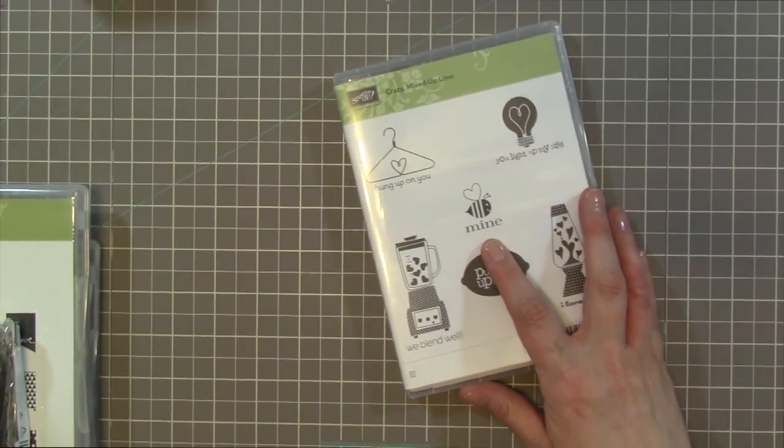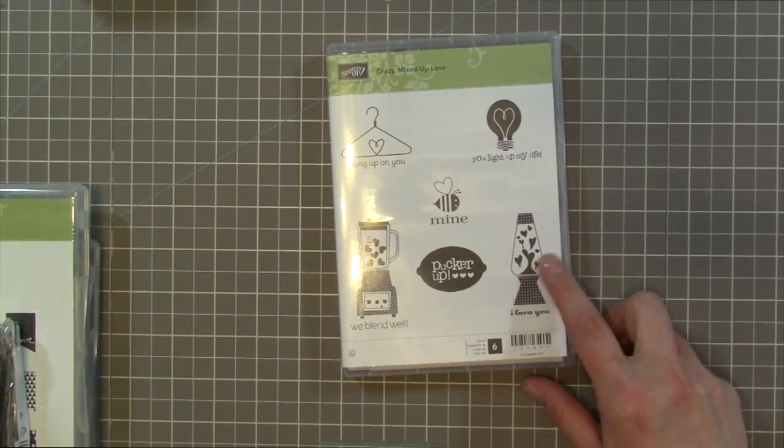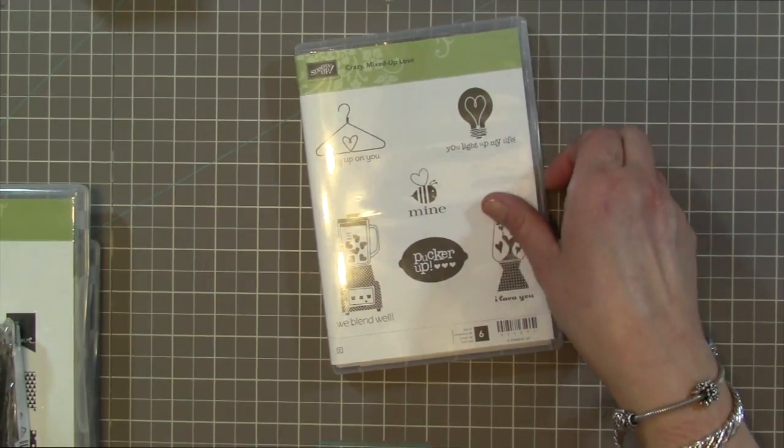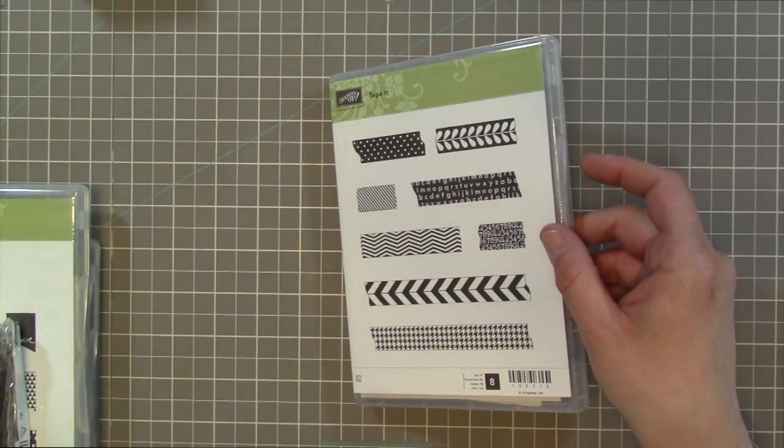The Crazy Mixed Up Love which I think is absolutely adorable. I love the blender. It will blend well. And there's the Lava Lamp so I lava you. Be mine. So cute. The Tape It which kind of has like a washi tape kind of look to it. So I got that one.